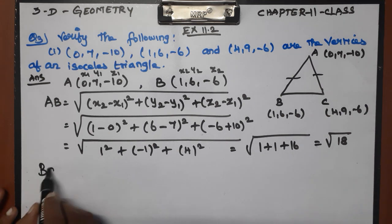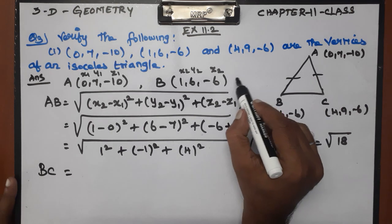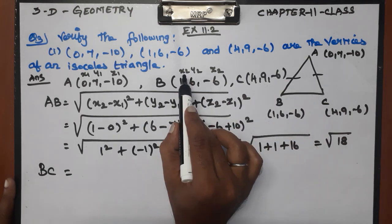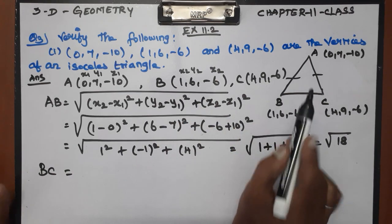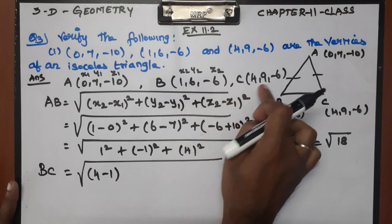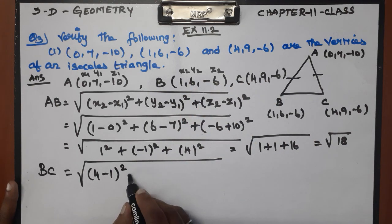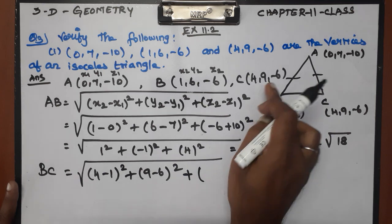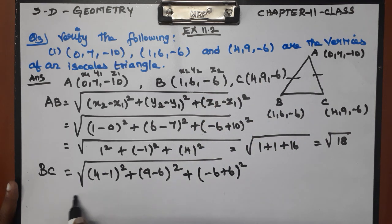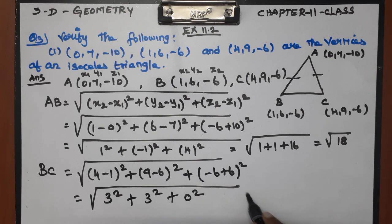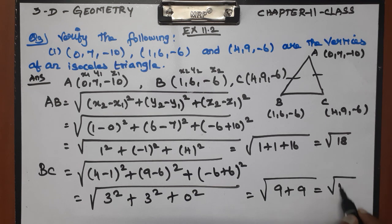Now for BC. B is (1, 6, −6) and C is (4, 9, −6). BC = √[(4−1)² + (9−6)² + (−6−(−6))²] = √[3² + 3² + 0²] = √[9 + 9] = √18. So BC = √18.